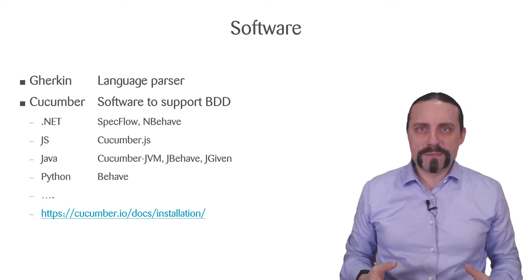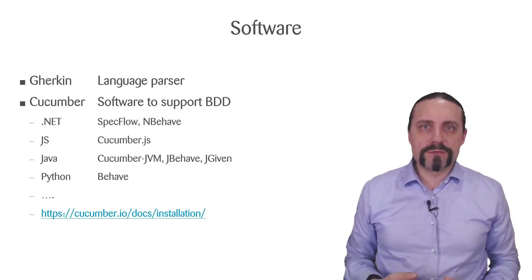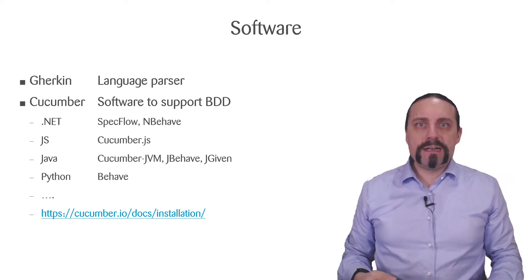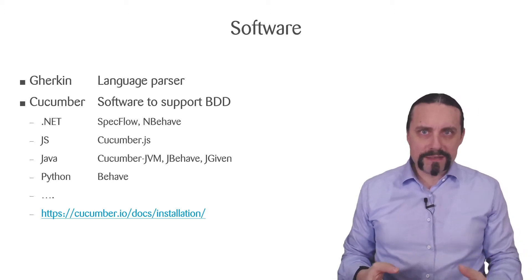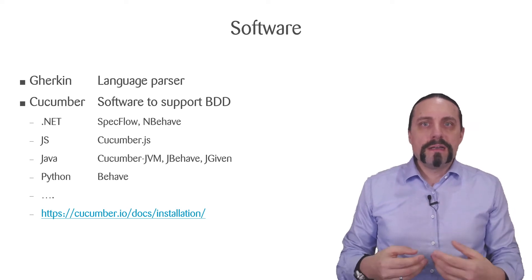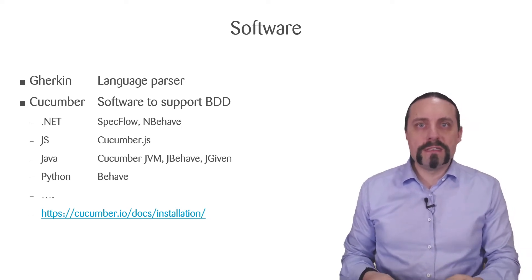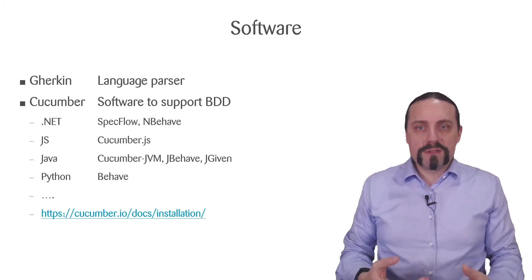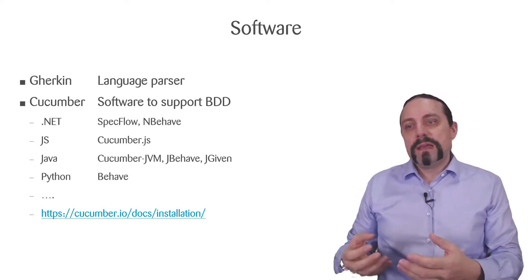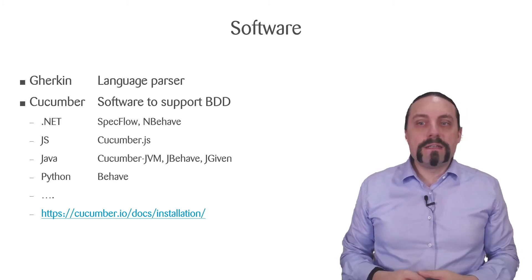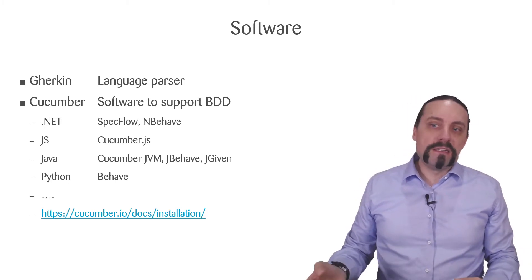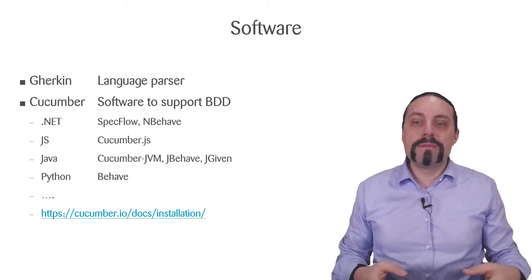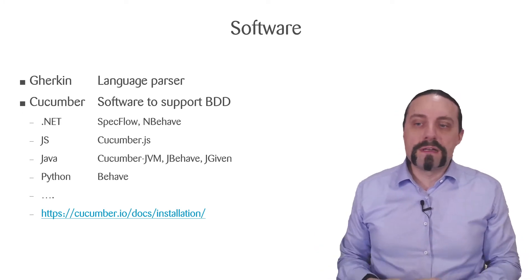To support us with behavior-driven development there is a lot of software on the market. We have Gherkin, which is the language parser. When defining the executable specification using BDD and the given/when/then form, Gherkin takes up these special words. Software that supports BDD includes Cucumber. In the .NET area we can use SpecFlow or NBeHave. In JavaScript we use Cucumber.js. In Java there is Cucumber.jvm, JBehave, JGiven. In Python we have Behave.